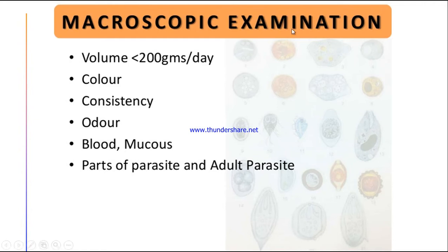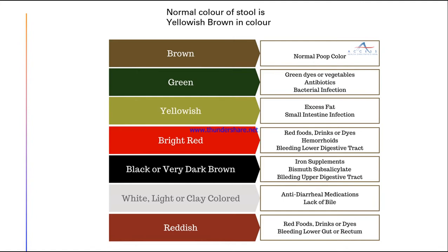In macroscopic examination, we check the volume of the stool — it should be less than 200 grams per day. We also check the color, the consistency (whether soft or hard), the odor or smell, and whether there is any blood or mucus in the stool. We also check for adult parasites or worms if any are present.